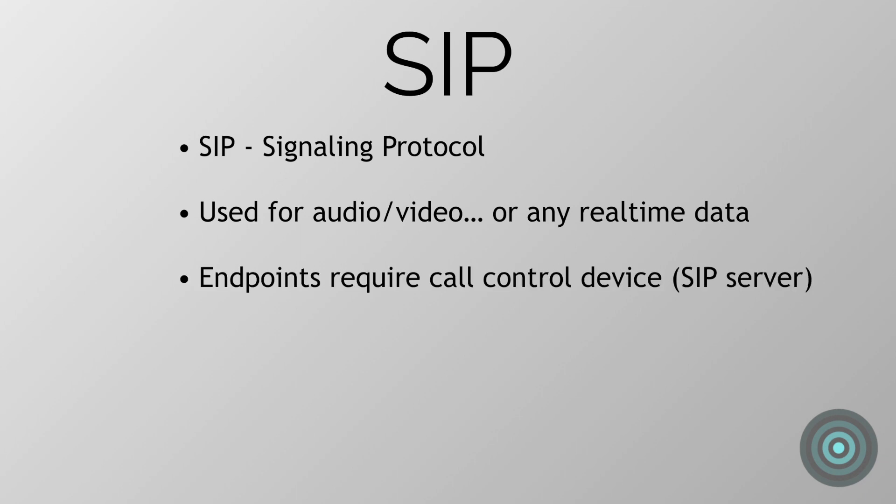SIP endpoints can't communicate without a SIP server or some kind of call control device. Both Cisco's CCM and Expressway can function as a SIP server. One really good thing about SIP that you may have already noticed is that SIP messages use plain text, and as long as you're familiar with the message types, the methods, and the formats involved in a SIP conversation, they can be pretty easy to read.